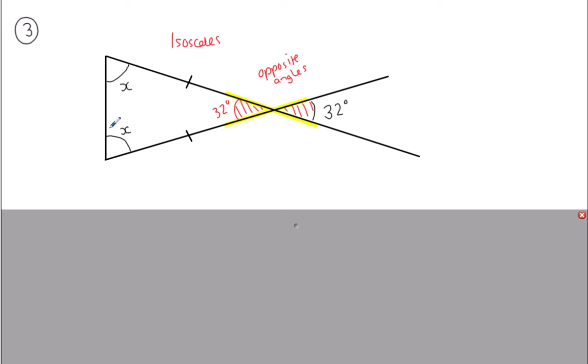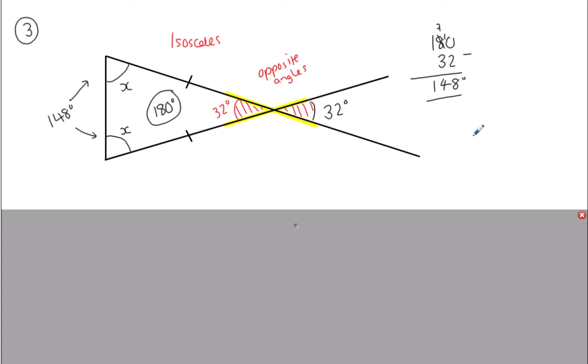To work out the missing angle, using 180 degrees in a triangle: 180 take away 32 is 148. Now 148 degrees is both of these base angles together. To work out what one of them is, I chop it in half: 148 divided by 2. It goes into 14 seven times and 8 four times. So X — both of them — are 74 degrees each.